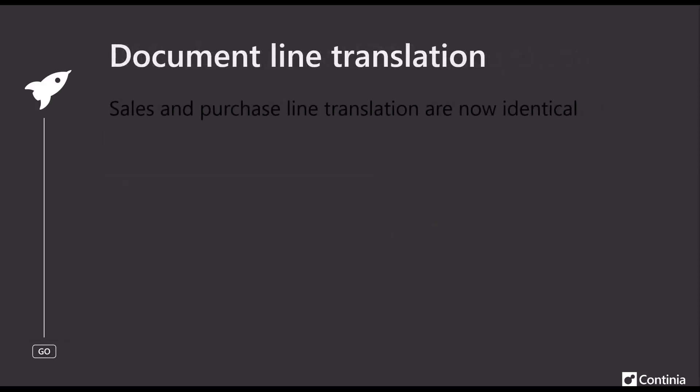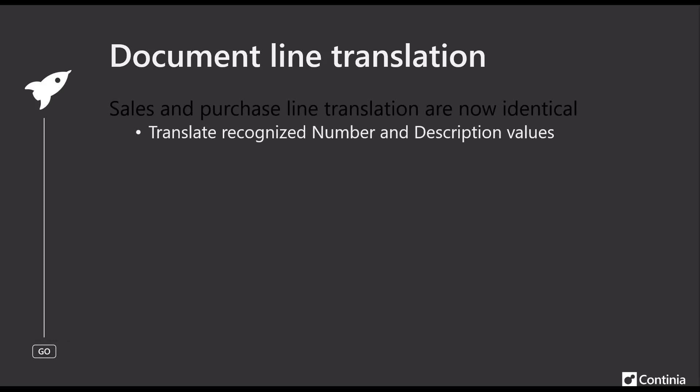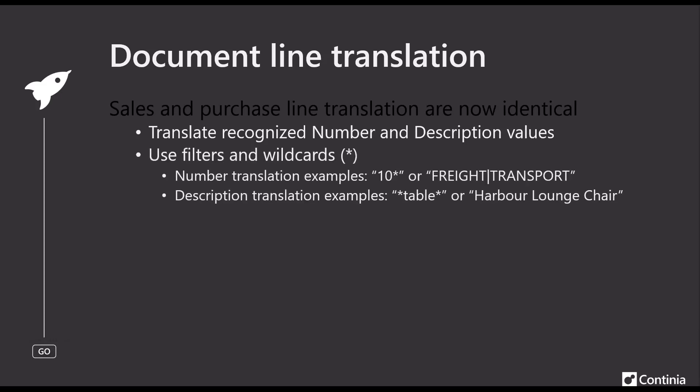Let's stay in the area of document line translations and recognition. We have for a while had the purchase line translation possibilities to translate the recognized number and description values, and that is now also possible for sales documents. So when you have a PDF from a customer that you want to register as a sales order, we can now translate the number and description using filters and wildcards.